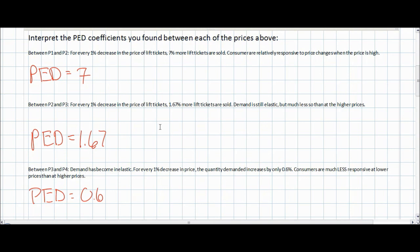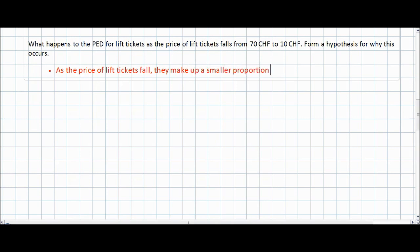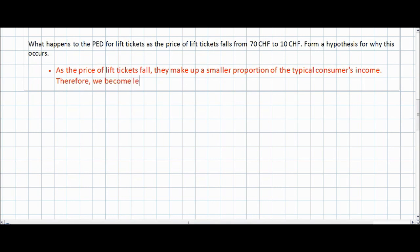So what we've seen is that as the price of lift tickets falls from the high price of 70 francs to the low price of 10 francs, the price elasticity of demand decreases. One reason for this is that as the price of lift tickets falls, they make up a smaller proportion of the typical consumer's income. Therefore we become less responsive to continued price decreases.